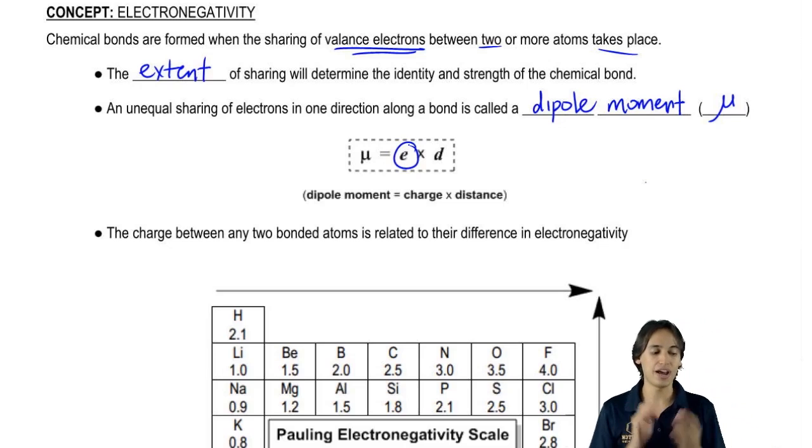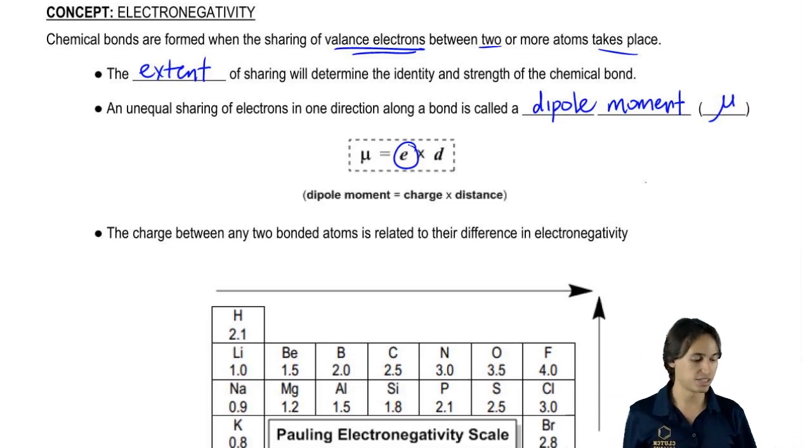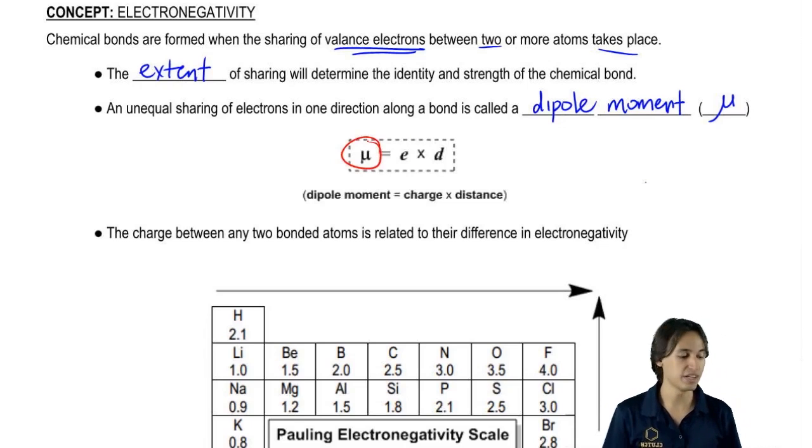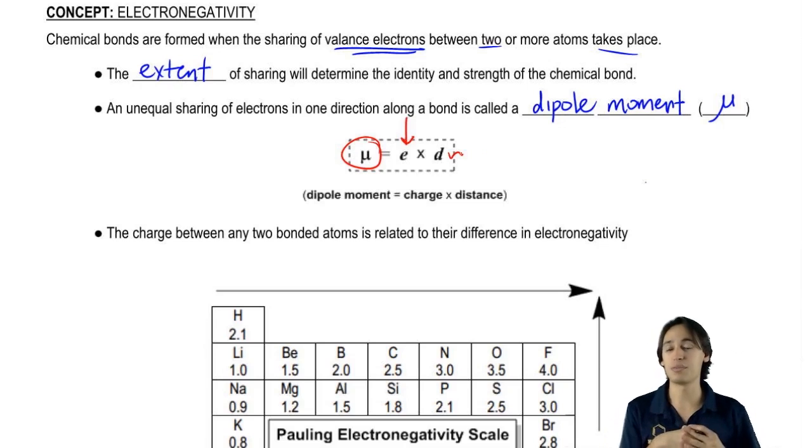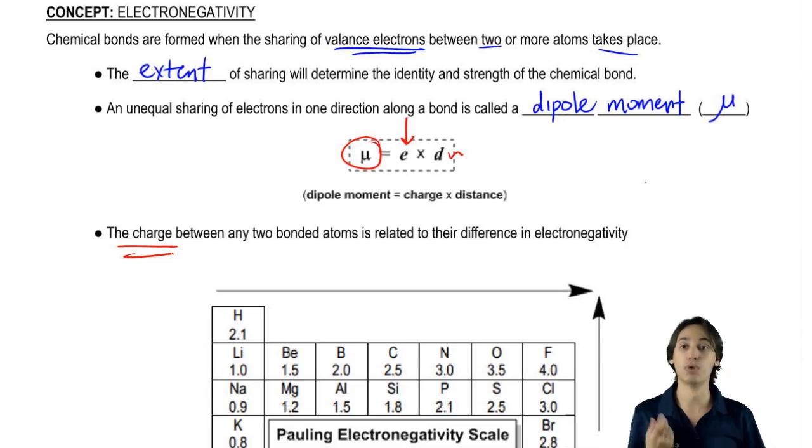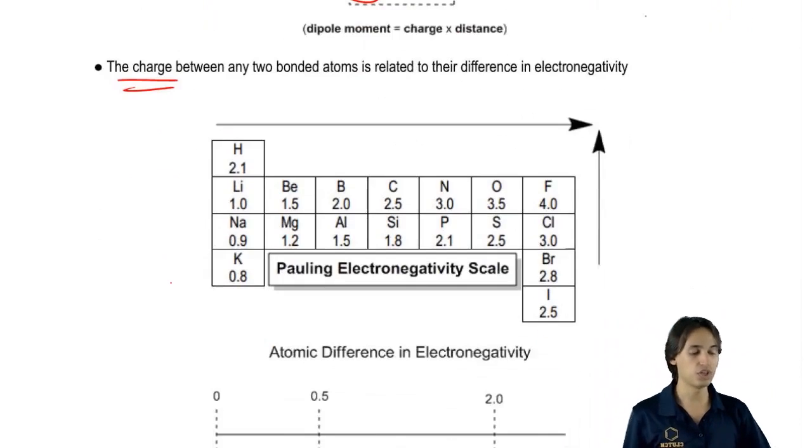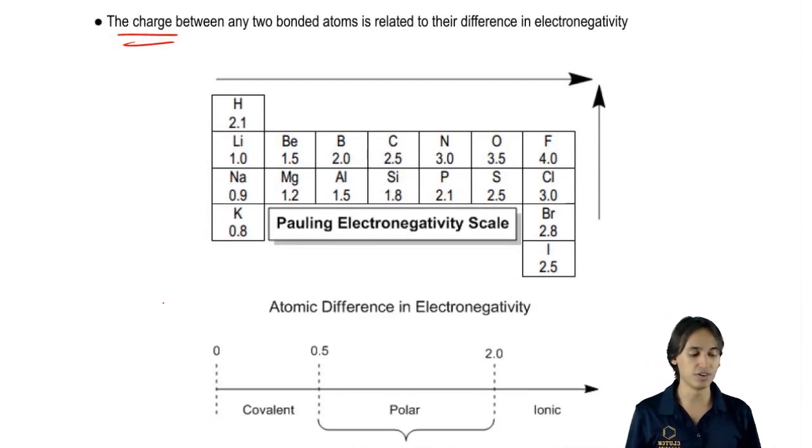So the charge between any two atoms is going to be related to their difference in electronegativity. The one that we're going to deal with the most is actually going to be the charge. The reason is because the distances are going to be very similar for a lot of these bonds. So the biggest difference is going to be the electronegativity. To figure out what the charge is, we're going to use the following scale. This scale is called the Pauling electronegativity scale.